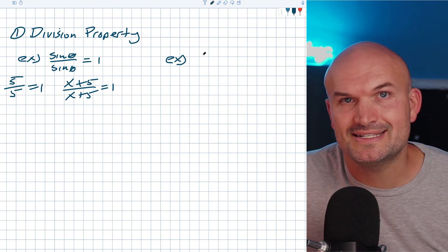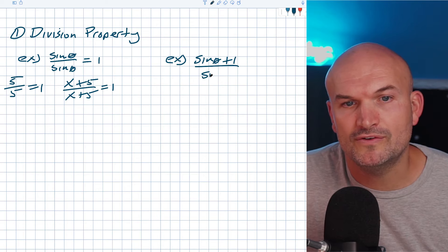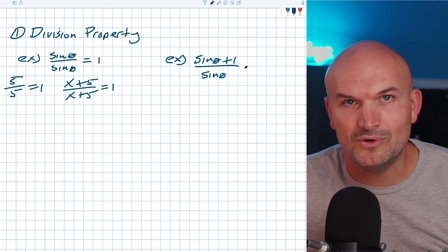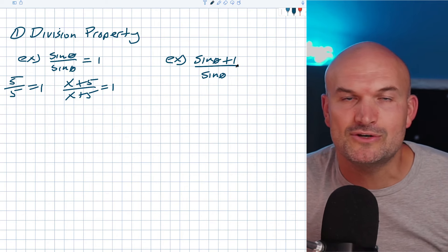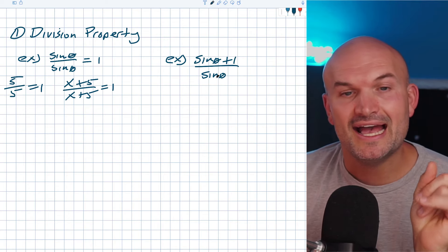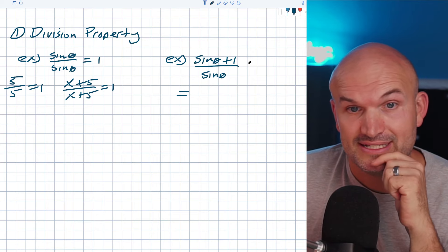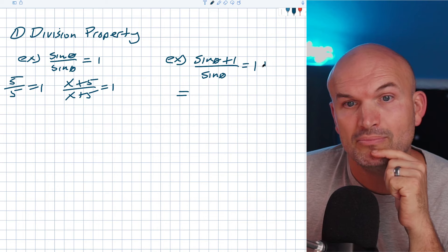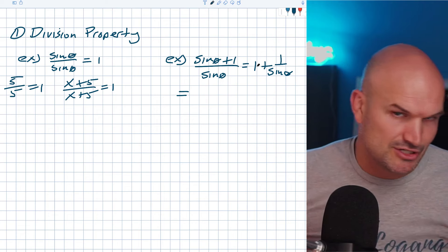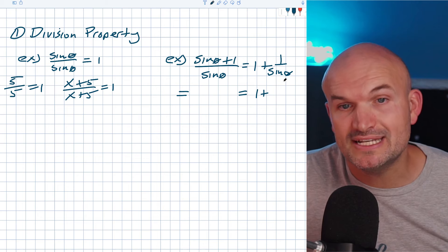Sometimes we'll have expressions that look like a sine of theta plus one, all over a sine of theta. Students immediately say the sine in the numerator and denominator divides out - but no, that is not equal to one. What we need to understand is the sine of theta is dividing into the sine of theta as well as dividing into the one. So the final answer is one plus one over sine of theta, which you can rewrite as one plus cosecant of theta.